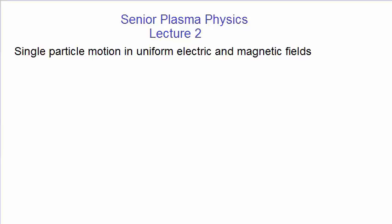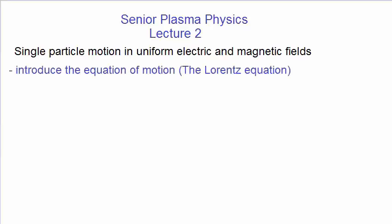We assume that the particles don't interact with each other. We do this for several reasons. We introduce the equation of motion called the Lorentz equation, and this equation appears in all sorts of theoretical treatments of plasmas, not just of individual particle motions.